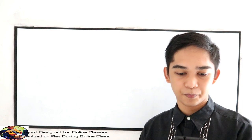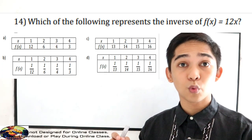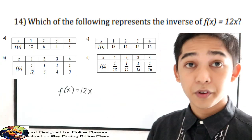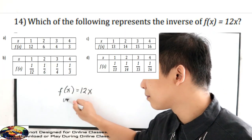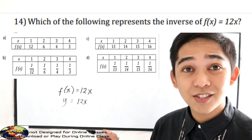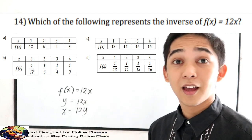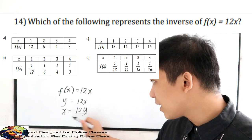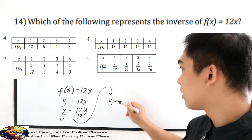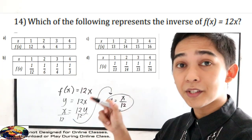For number 14, which of the following represents the inverse of F of x equal to 12x? First step: change F of x to y, so y is equal to 12x. Next step: interchange x and y, so y becomes x and x becomes y. Now solve for y by dividing the equation by 12 on both sides. We get y is equal to x over 12. By the commutative property, these are equal.